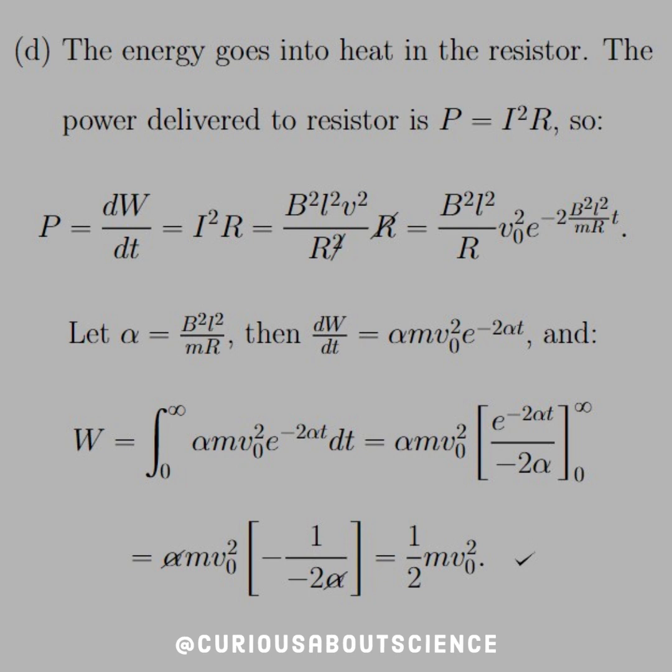We just found what I squared was, so we can use that again. And then we could cancel out the R's as such. Again, we know what everything is here. And now we have an equation with respect to time and a dW with respect to time, so we could have another separable equation. It might behoove us to make this algebraic substitution to kind of simplify things. So let alpha equal B squared L squared over MR. And then we could see how that simplifies through.